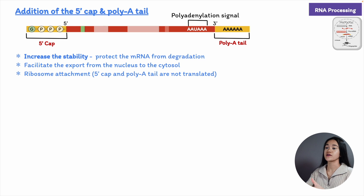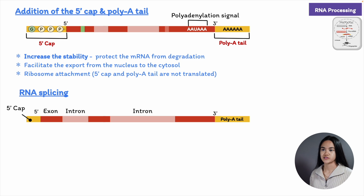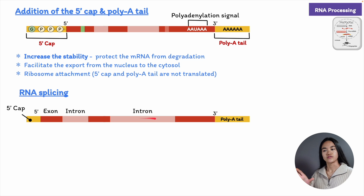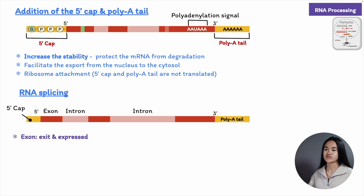Capping and polyadenylation occur in all RNA transcripts, but most eukaryotic mRNAs must also undergo an additional processing step called RNA splicing. The sequence of DNA coding for a polypeptide is not continuous — it's split into segments. Most protein-coding genes have their coding sequences interrupted by long non-coding sequences called introns. The coding sequences are called exons because they are eventually expressed. You can also remember exons as sequences of RNA that exit the nucleus — exon, exit, and express yourself.